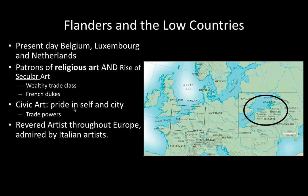These artists were often revered by the Italian painters whose names we probably know much more — like Leonardo. But the northern artists are the first to really use and revolutionize the use of oil paint, which we haven't seen yet. With oil paint, they're able to achieve even more and more realism.